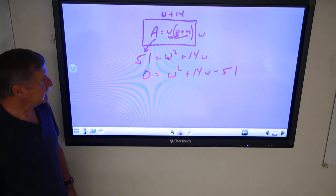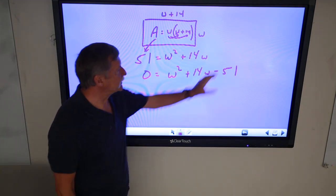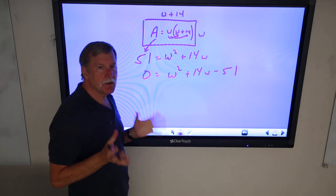Everybody see what I did? Descending order equal to 0. And it doesn't matter whether 0 is on this side or 0 is on the other side. But I want to keep my squared term positive.